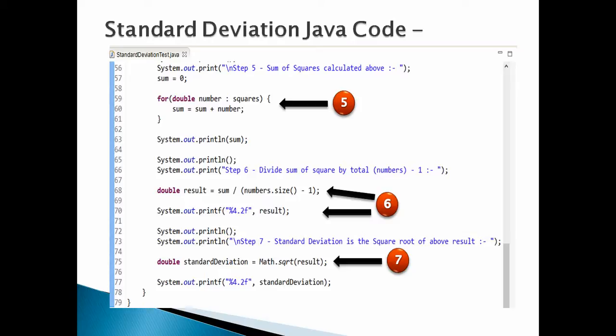Step 7: take square root of above division, gives standard deviation of numbers. Taking square root of 698.18 gives standard deviation as 26.42. Moving ahead.